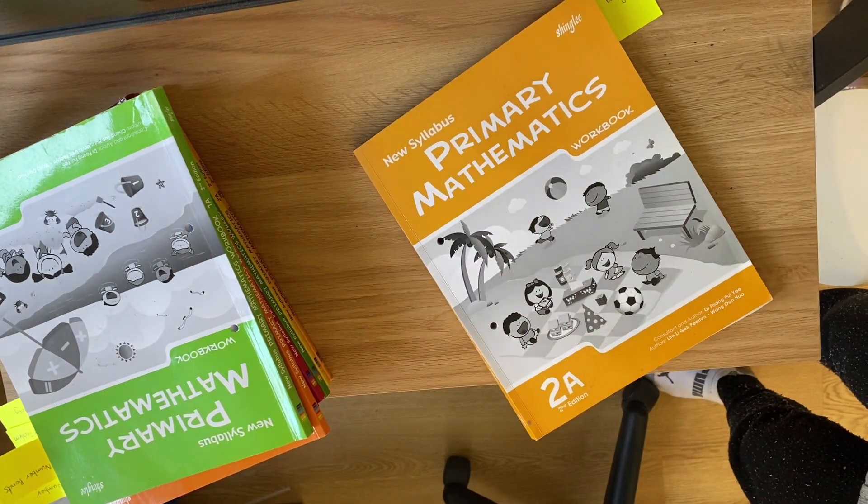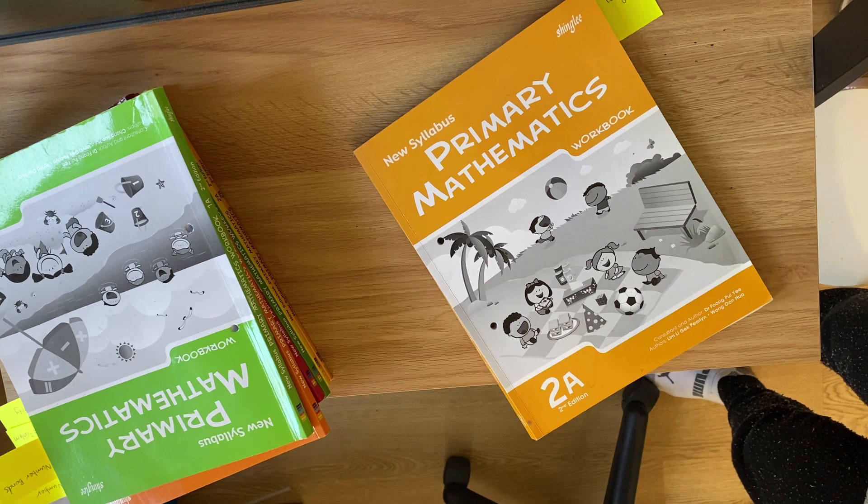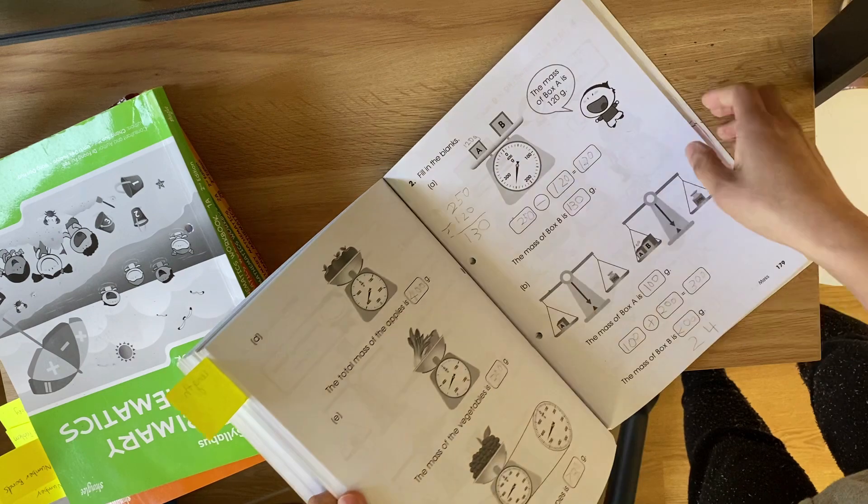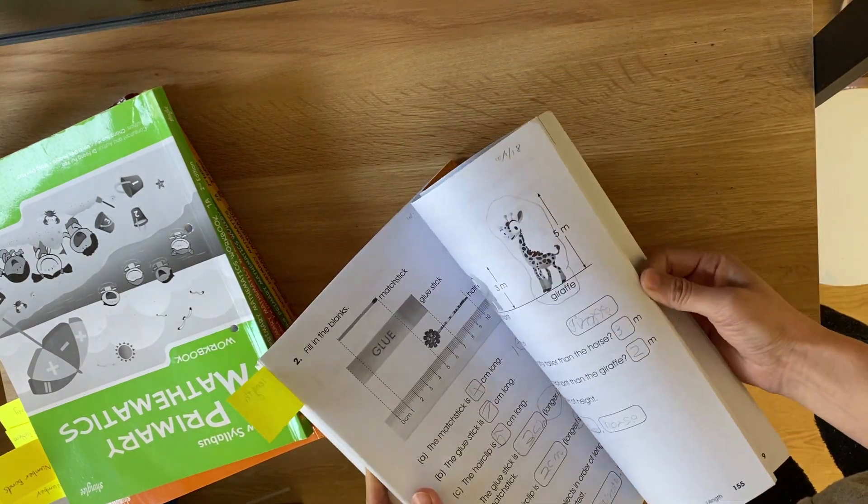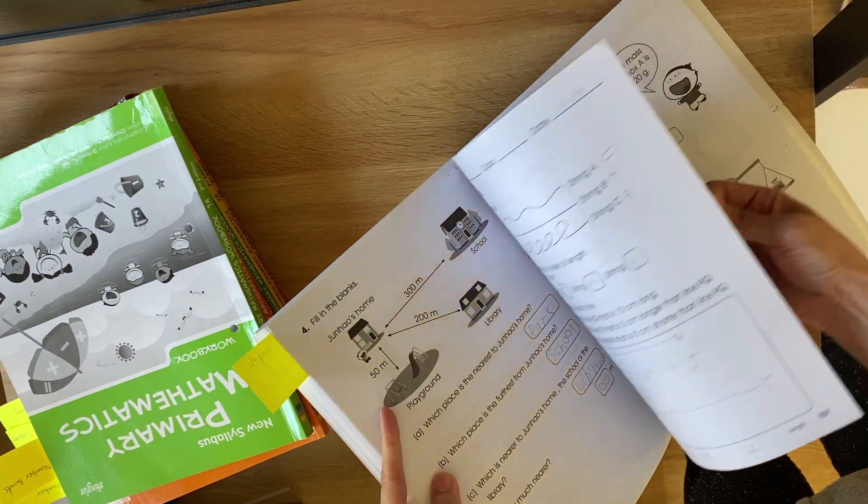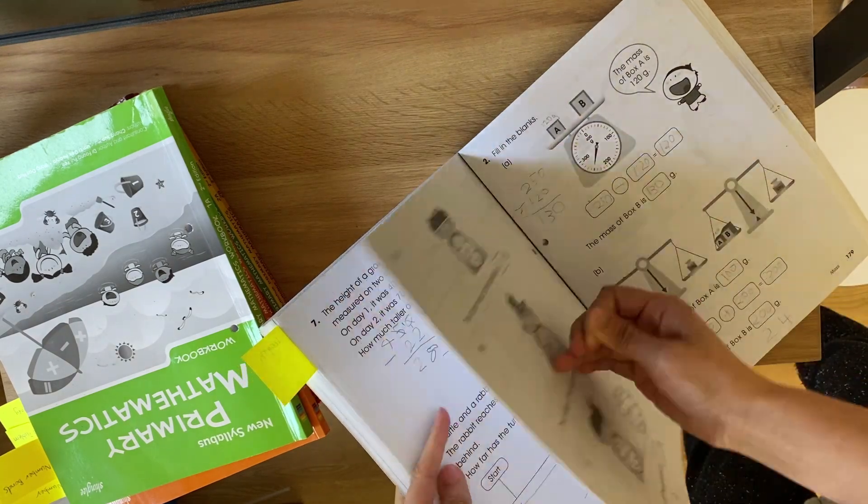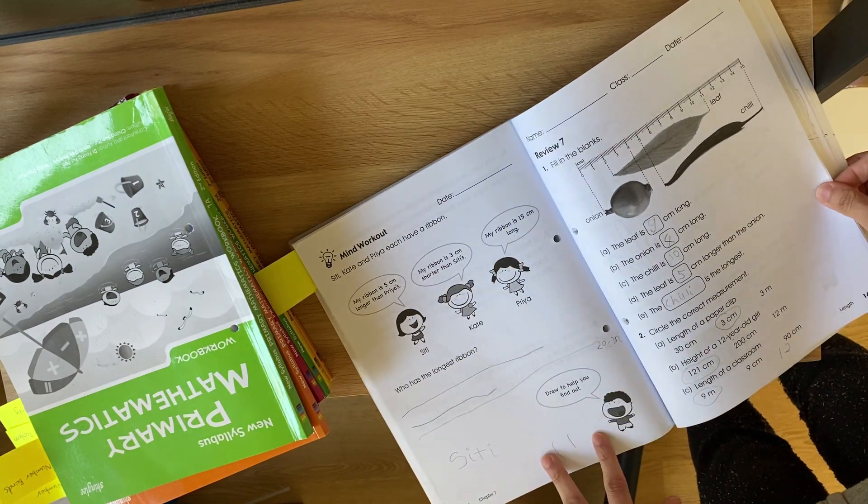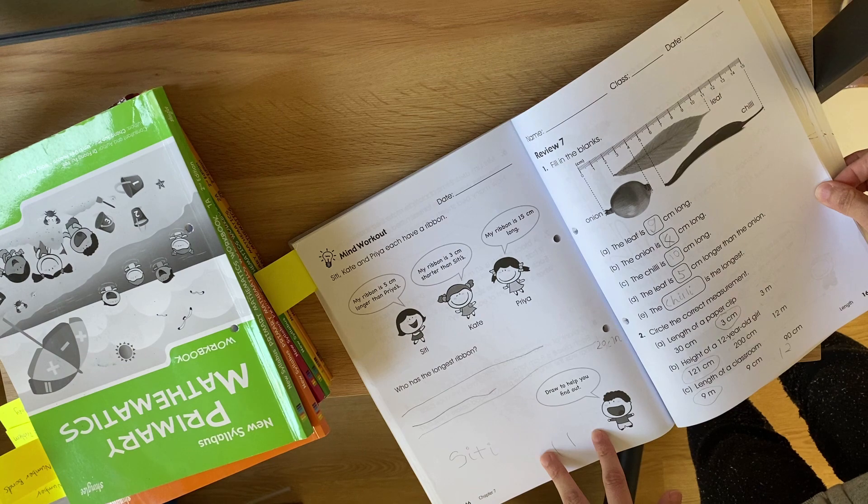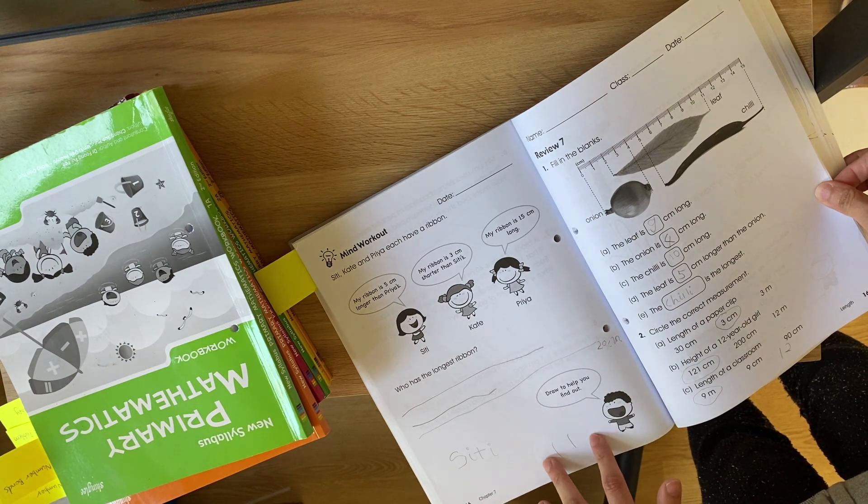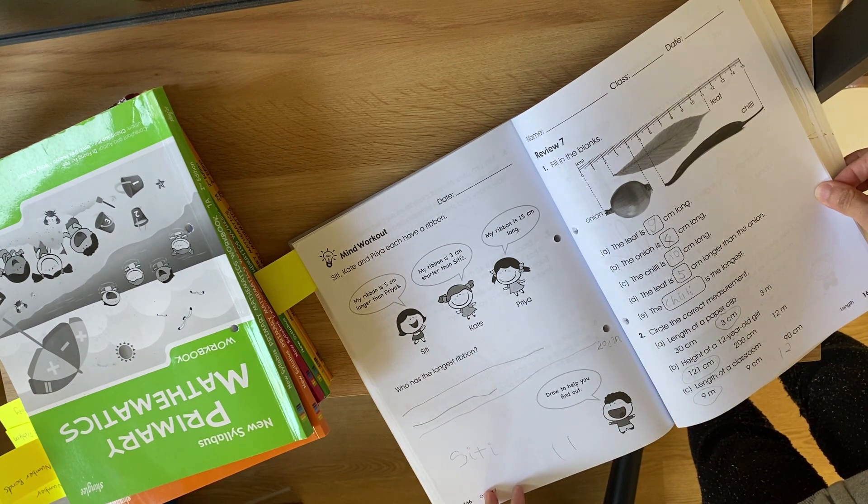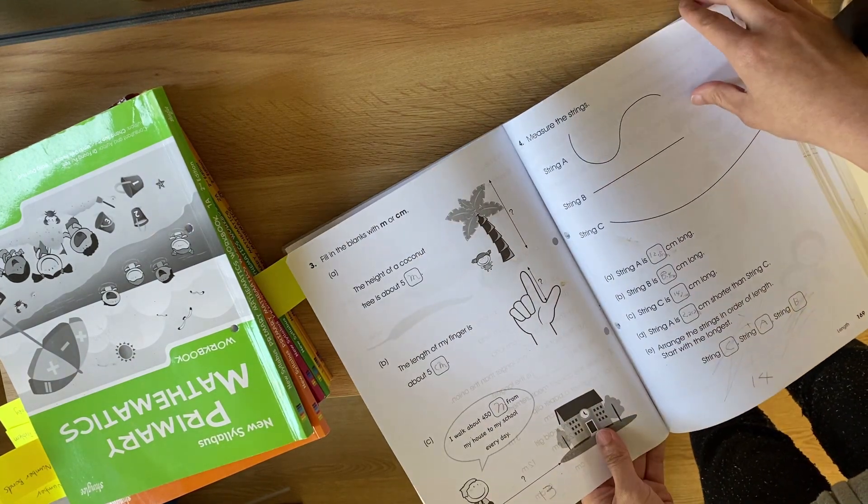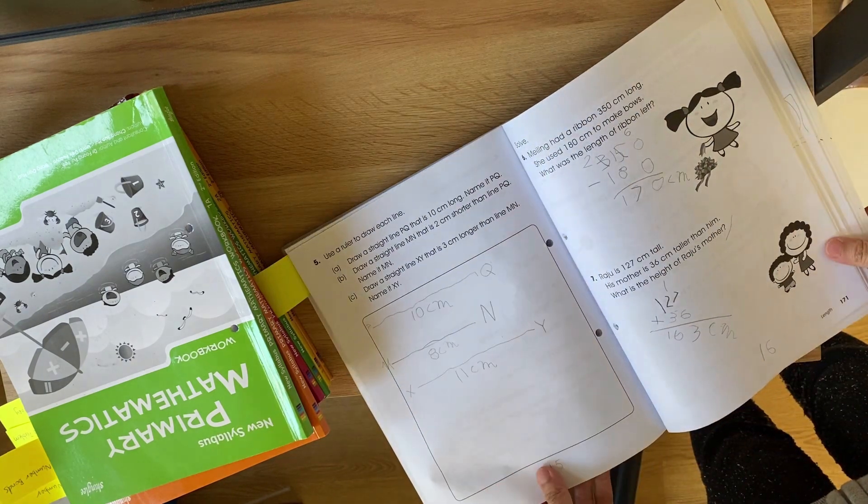Most units are then followed by word problems, mind workout and a review, and that will be a full unit. So this is a mind workout. Most units end with this, which is kind of like a harder level problem solving puzzle type question using the concepts that you've learned during the chapter. And then you come to the review going through all the information that you've already learnt in that chapter.